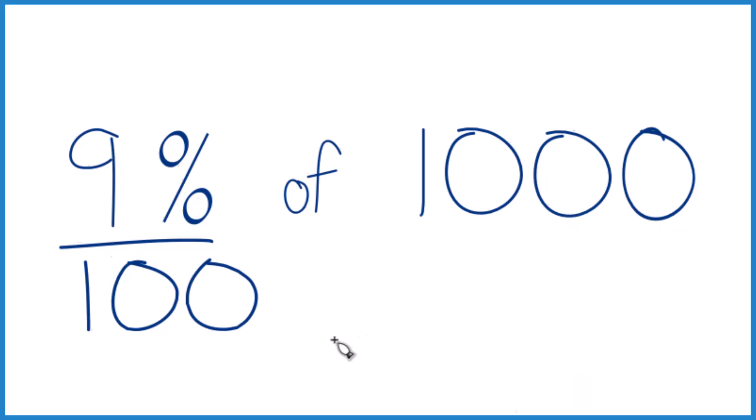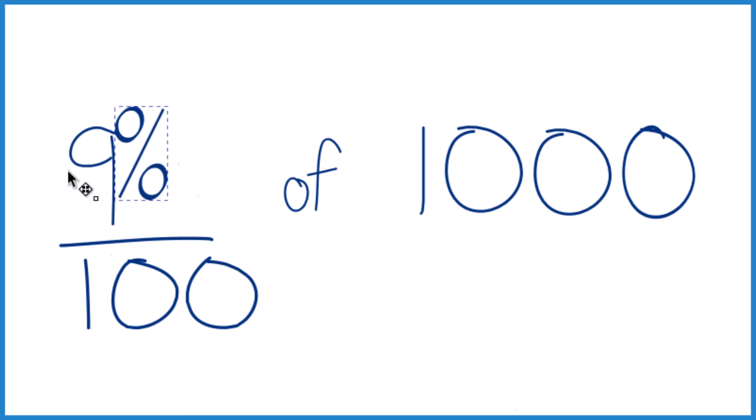Here's another way to think about it. You could say 9% of 100. That's 9 per 100. Instead of of, we can just multiply.